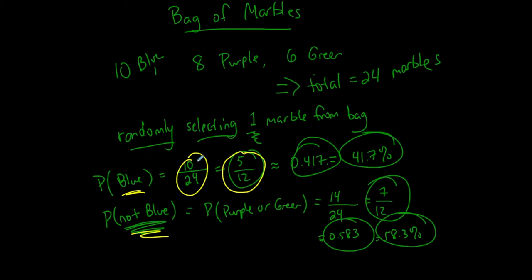Notice that if I take this and I add it to this, I get one. If I take 0.417 and I add 0.583, I get one. If I take 41.7% and I add 58.3%, I get 100%. These two are called complements.